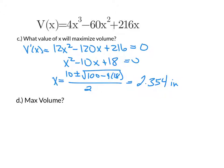The last part is asking what the maximum volume was going to be, and that's just going to amount to taking that 2.354 and plugging it back into our volume function, not the derivative of our volume, but the volume. So, that 4x³ - 60x² + 216x.